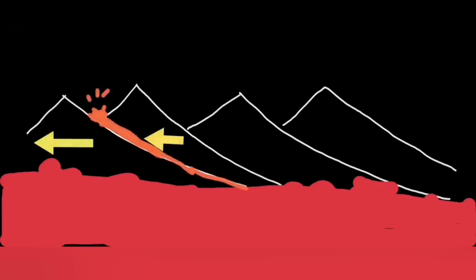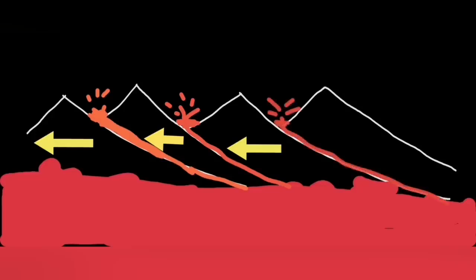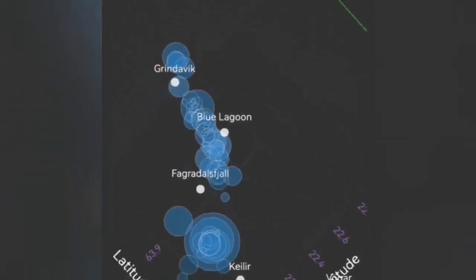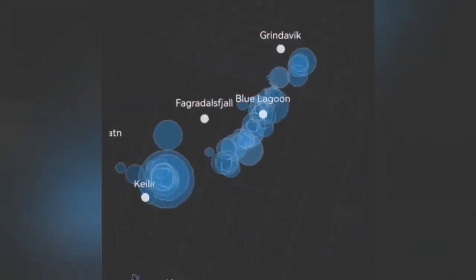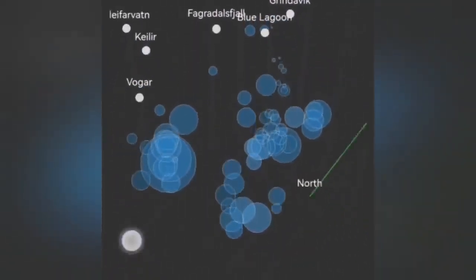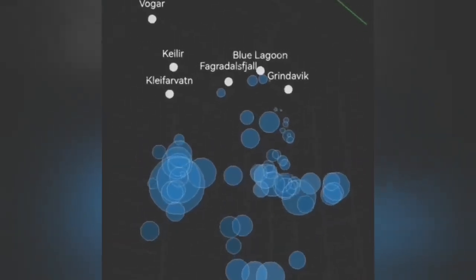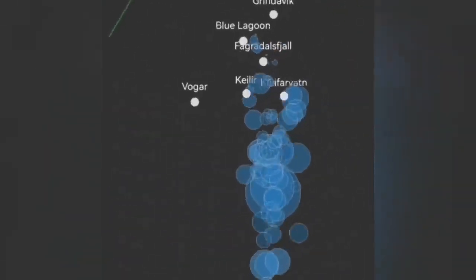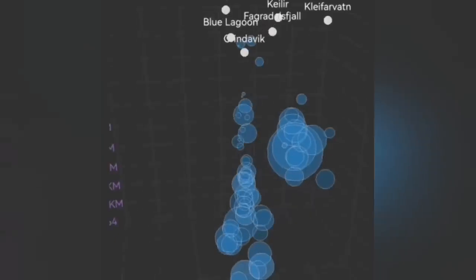We had the Grindavík system related to Svartsengi erupting now, and we have now in the Krýsuvík system some activity. Magma probably is rising again. I show you here clear for what is related to that Krýsuvík volcanic system, and Grindavík, you can see that.